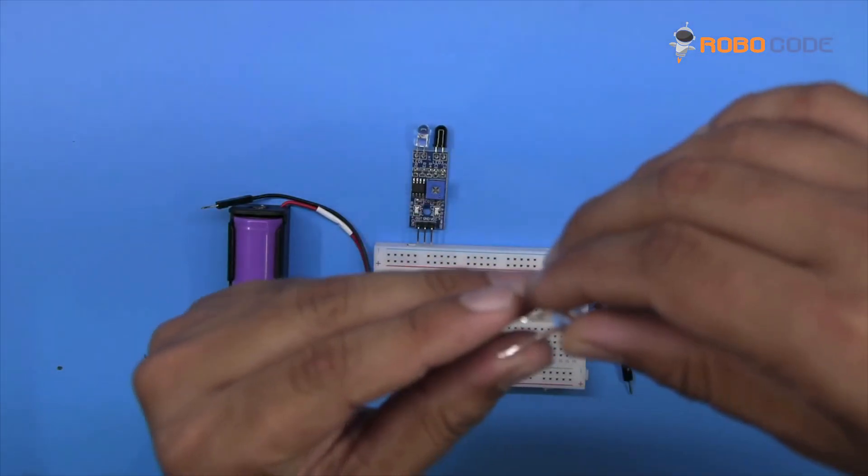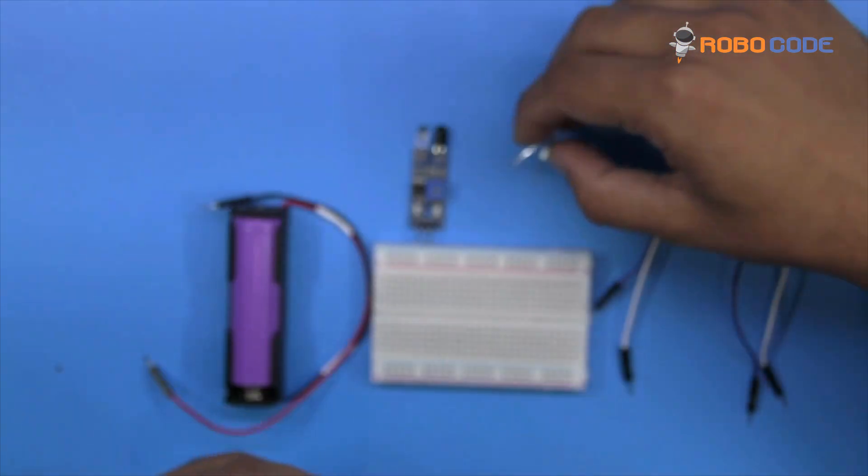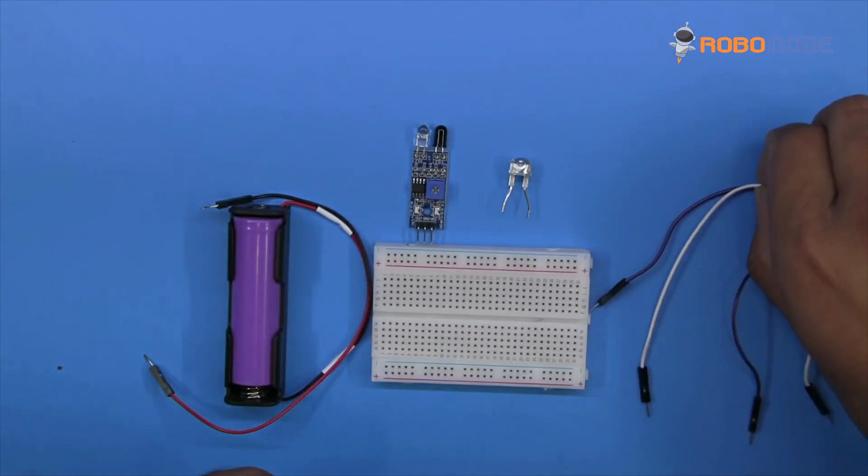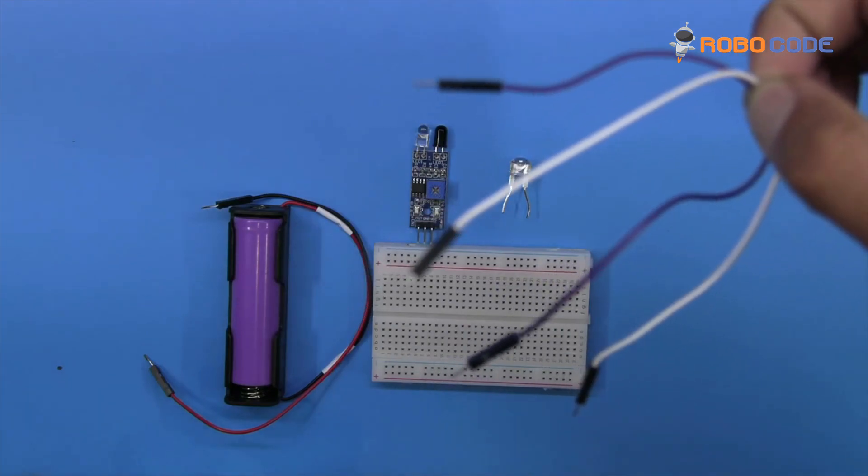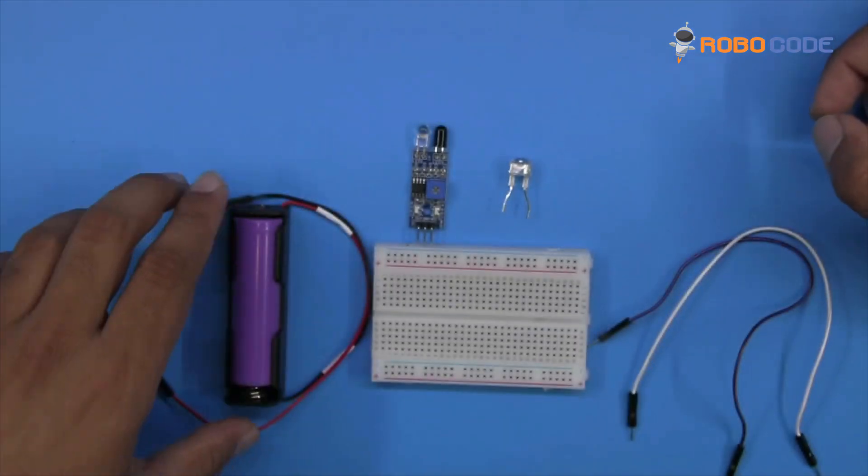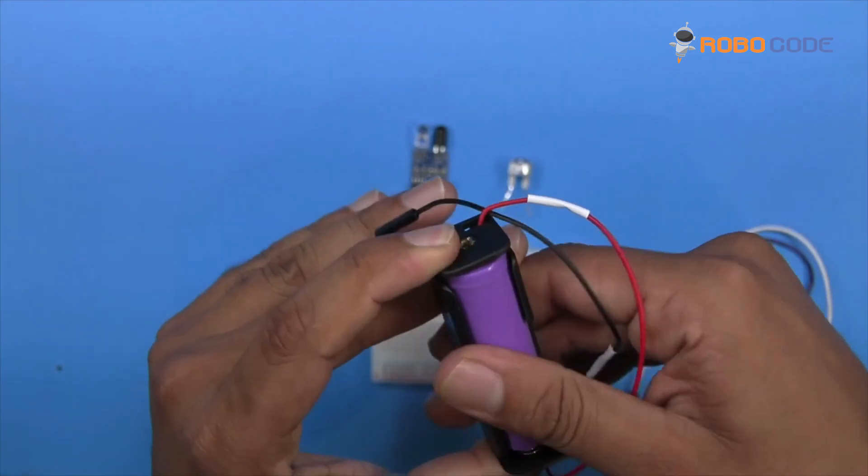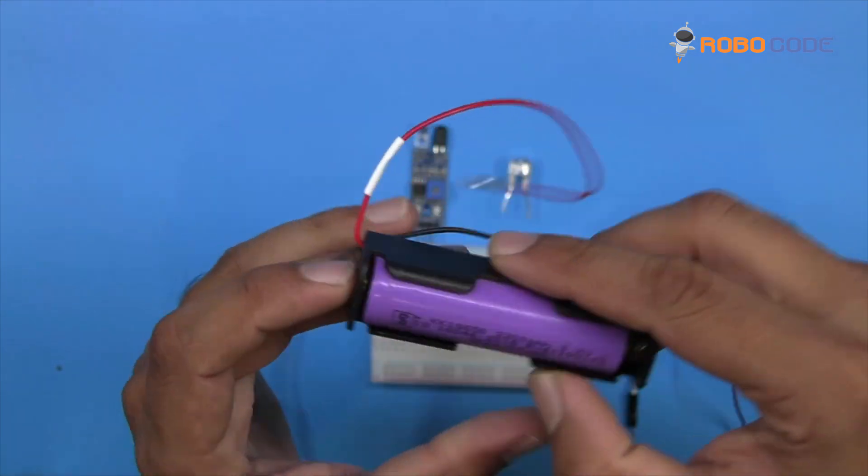We'll also need one LED, two male-to-male jumper wires, and a single battery holder with a lithium battery of 3.7 volts.